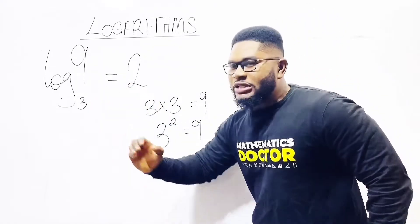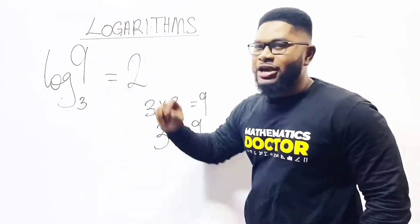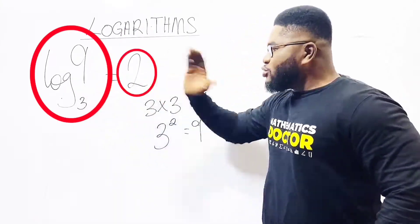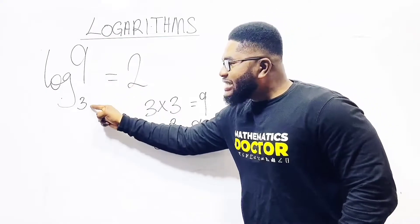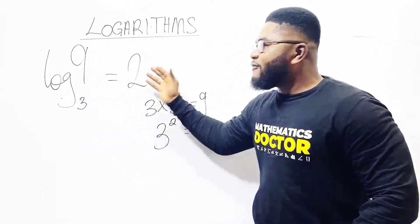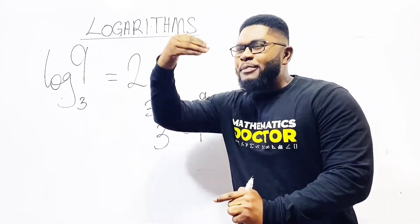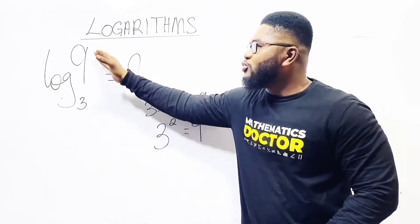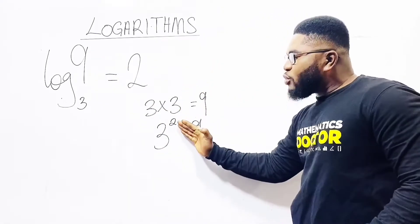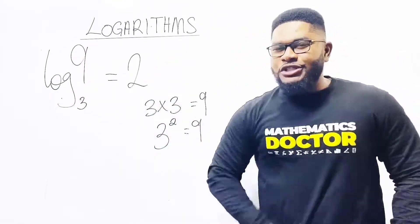Meaning, 3 has to multiply itself 2 times — 3 times 3 — to get 9. So the meaning of log 9 base 3 is 2, meaning the base is actually the secret to getting the final answer for your log. You just have to use the base raised to a power or exponent to produce the number, and that power — in this case 2 — becomes the final answer of the log. Let us take another logarithm.